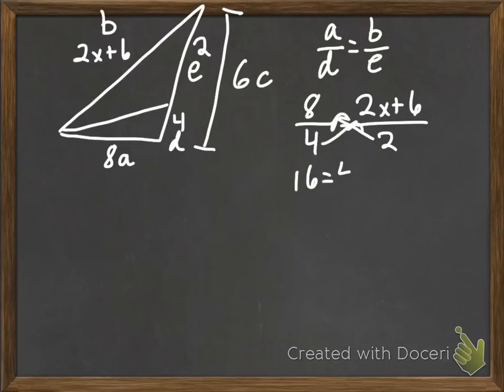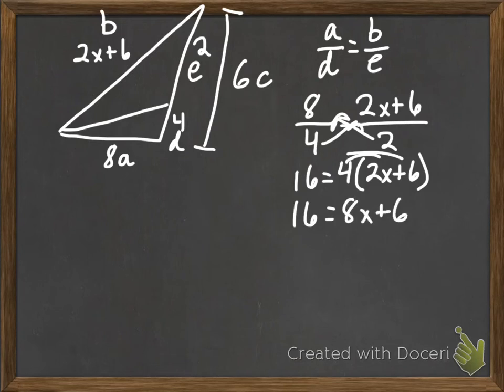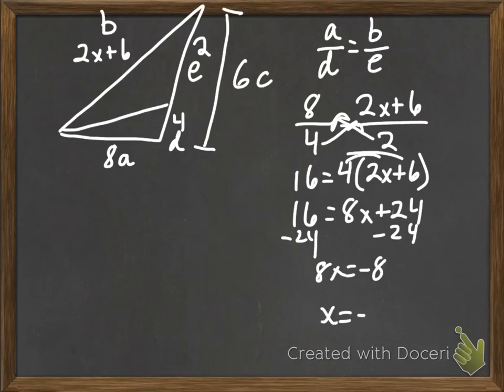Now when we cross multiply here, we're going to take that 4 and distribute it to both of these terms. So if it's not just a number or just one term there, write it out like you're going to distribute. That way you don't forget anything. 6 times 4 is 24, not 6. So we subtract 24. We get 8x equals negative 8. So x equals negative 1.